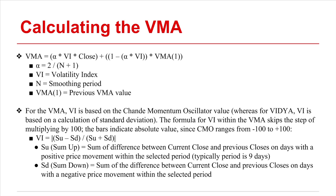The variable moving average is a lot simpler to calculate on paper than its cousin, the variable index dynamic average. The VMA value is determined by multiplying alpha times the volatility index times the current close, plus 1 minus alpha times the volatility index times the previous period's VMA value. Where alpha equals 2 divided by n plus 1, and n is the user-selected smoothing period.